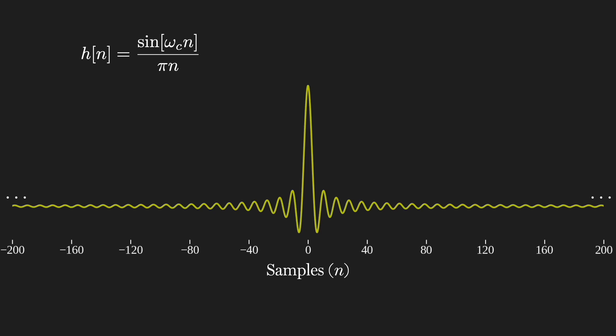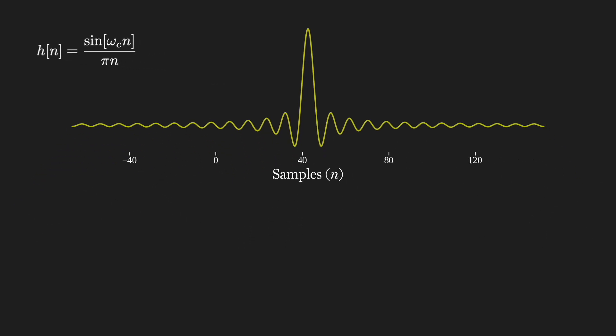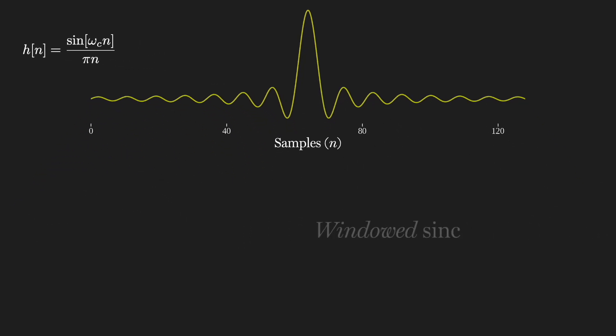But what if we just cut off some of the smaller oscillations? This would keep it finite in length, and then we can also shift the response so that it starts at time n equals zero, keeping it causal. This is the same as applying a window, in this case a rectangular window, so we can call the result a windowed sinc.